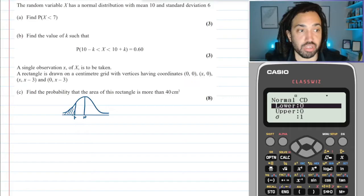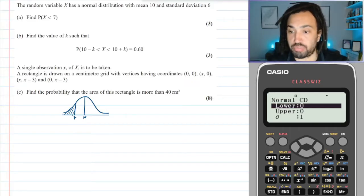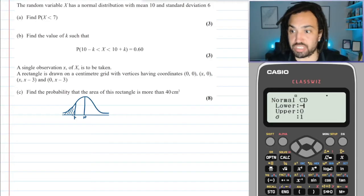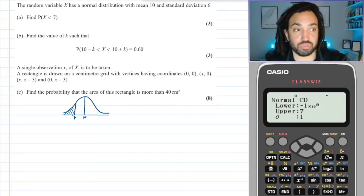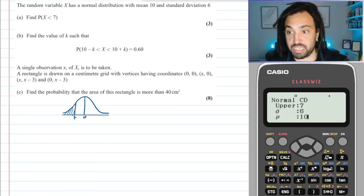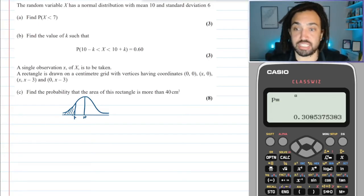So the lower bound is, well, it can just go any way to the left, so let's just go negative a huge number just to make sure. And the upper bound is 7, so that is the region which I've just drawn on that sketch. Standard deviation is 6 and mean is 10, and this gives me my probability.